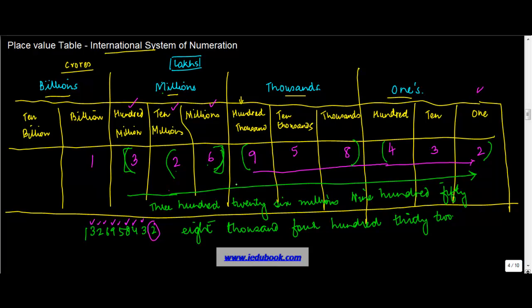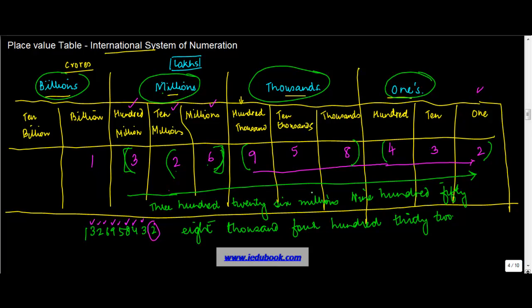Now, insofar as separating periods are concerned, the periods in the international system are: ones, thousands, millions, and billions. So if you were to write this number, you count in groups of three from the right — one, two, three for ones; one, two, three for thousands; one, two, three for millions — and the commas separating the periods come after ones, thousands, millions, and billions.